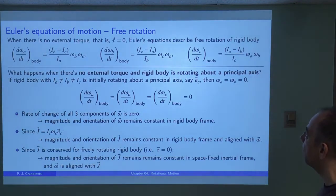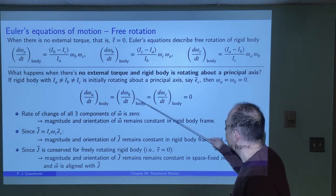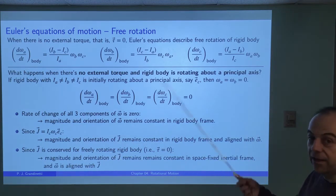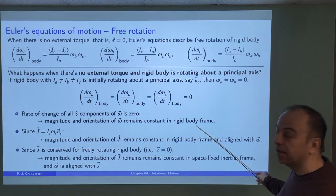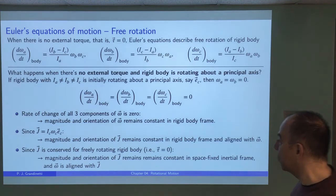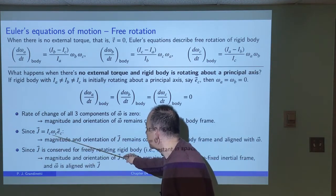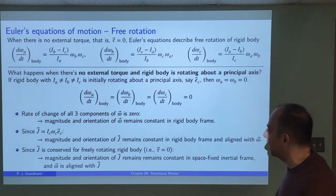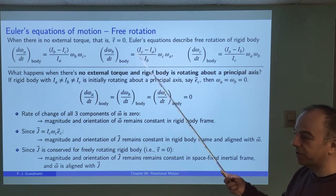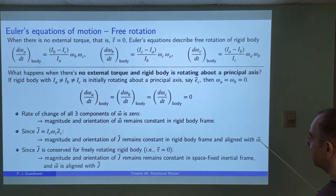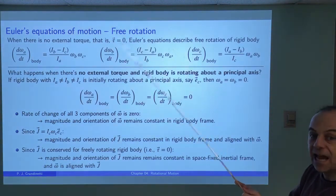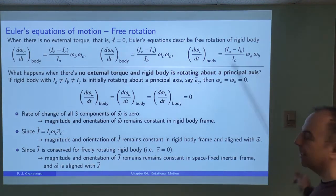From Euler's equations we find that the angular velocity vector is not changing — the rate of change of all three components is zero — so the magnitude and orientation of omega remains constant in the body-fixed frame. Since J equals I_C * omega_C * eC (the only component present), J is also independent with constant magnitude and orientation, and it's aligned with the omega vector. So the angular momentum vector and angular velocity vector are both aligned and time-independent when there's no torque and the body rotates about a principal axis.